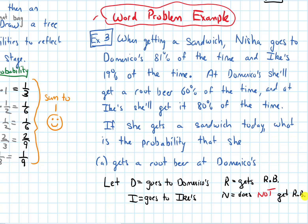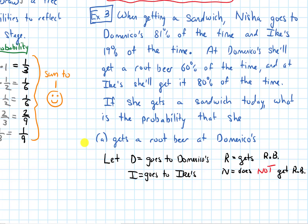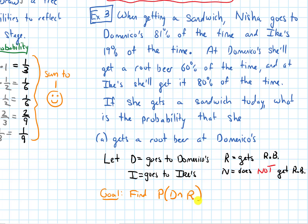So we have these events. Let's think about what our goal ultimately is. Our goal is to find a certain probability. The question asks: what is the probability that she gets a root beer at Domenico's? That means she needs to go to Domenico's and get a root beer — so that's D intersect R. We are after this probability.